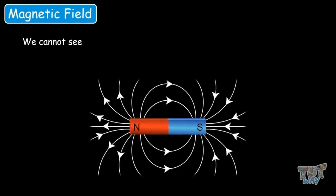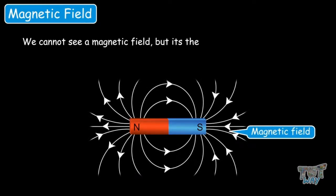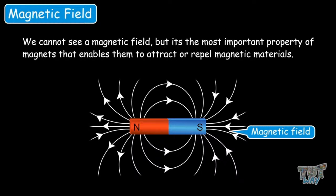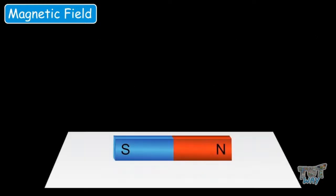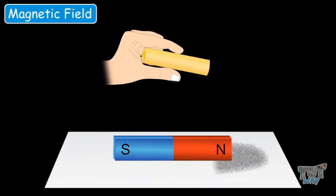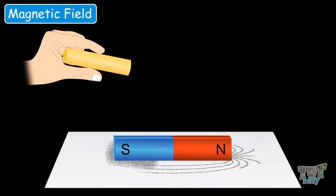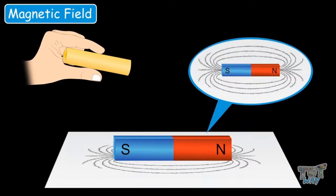We cannot see the magnetic field, but it is the most important property of magnets that enables them to attract or repel magnetic material. Now let's see an activity that enables us to see the magnetic field. Place a magnet onto a white sheet of paper and then sprinkle very tiny iron filings around the magnet. The iron filings will take a particular shape, depicting the magnetic field of a permanent magnet.